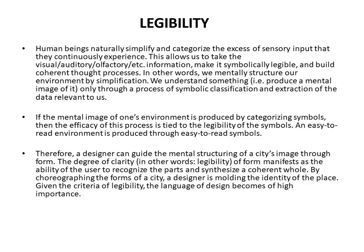Legibility: human beings naturally simplify and categorize the excess of sensory inputs that they continuously experience. This allows us to take visual, auditory, olfactory, and other information, make it symbolically legible, and build coherent thought processes. In other words, we mentally structure our environment by simplification. We understand something — that is, produce a mental image of it — only through a process of symbolic classification and extraction of data relevant to us. If mental images of one's environment are produced by categorizing symbols, then the efficiency of this process is tied to the legibility of symbols.